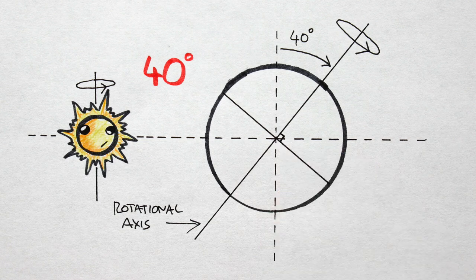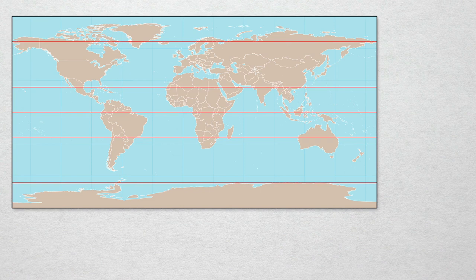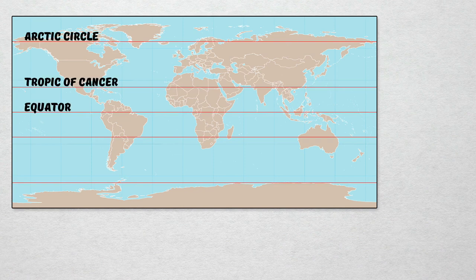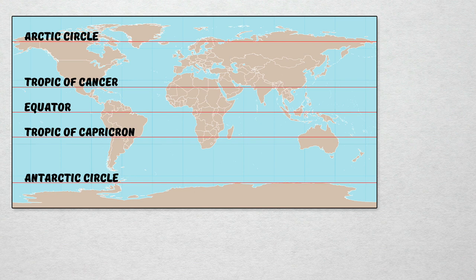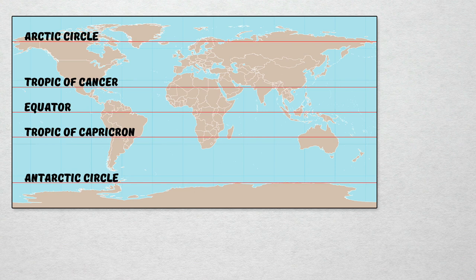The equator is the first of five major lines of latitude we'll need to mark in. On Earth, we call these lines the Arctic Circle, the Tropic of Cancer, the Equator, the Tropic of Capricorn, and the Antarctic Circle. Any tilted planet will have these latitudes, albeit their naming conventions will be different. So why are these important?